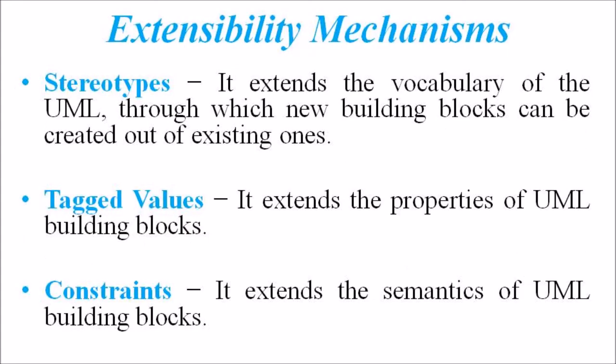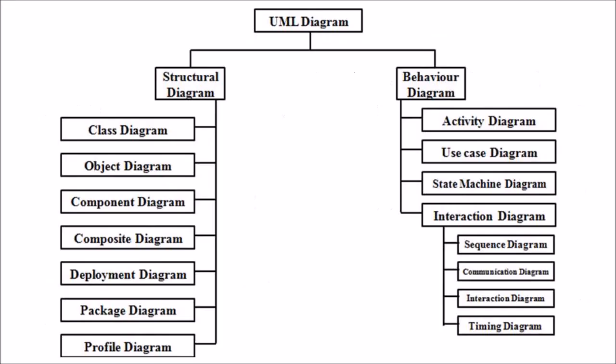The fourth mechanism is the extensibility mechanism. UML is an open-ended language — it is possible to extend the capability of UML in a controlled manner to suit the requirements of a system. Extensibility mechanisms include Stereotype, Tagged Values and Constraints. Stereotype extends the vocabulary of UML through which new building blocks can be created from existing ones. Tagged Value extends the properties of UML building blocks. Constraints extend the semantics of UML building blocks.